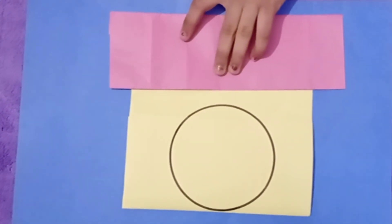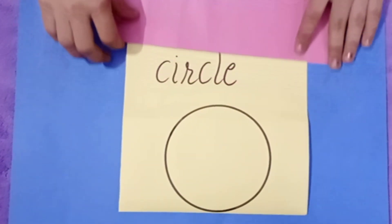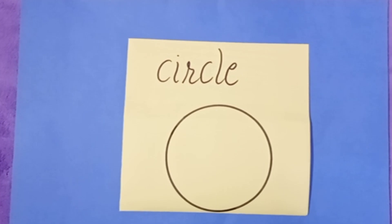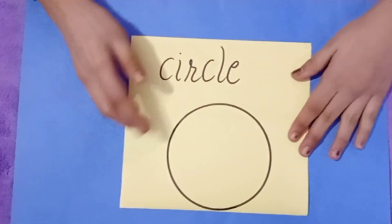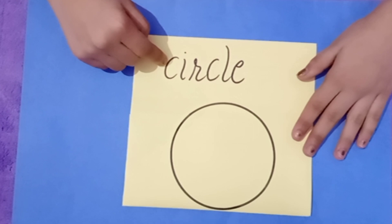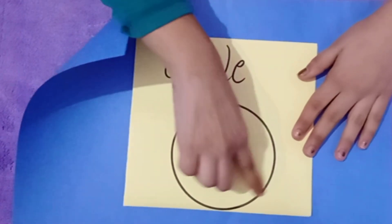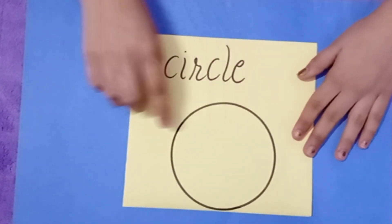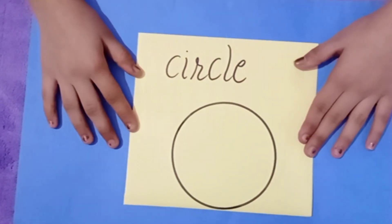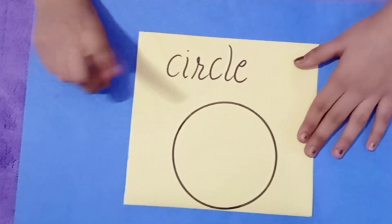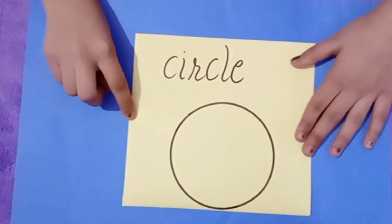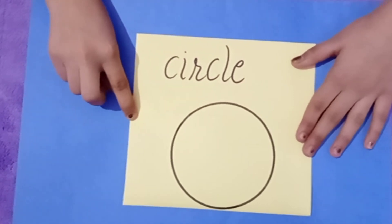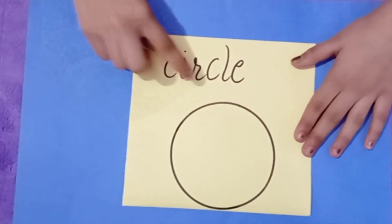This is a circle. Dear students, this is a circle. It is round in shape. It has no side and no corner. So this is a circle.